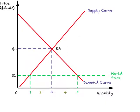Let us revisit the familiar diagram. We have the typical supply curve and demand curve. Where they meet is the equilibrium in Autarchy, and the price in Autarchy will be $3. Quantity demanded and supplied will be 3 units. Once this country engages in foreign trade, when the world price is $1, demand is 5 units, supply is 1 unit, and imports are 4 units.